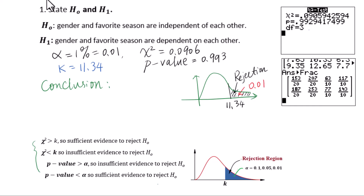Chi-square equals 0.0906, which will be located on the left side of the critical value — like here, 0.0906 — which means it's outside the rejection region. Since 0.0906 is less than 11.34, there is insufficient evidence to reject H0.